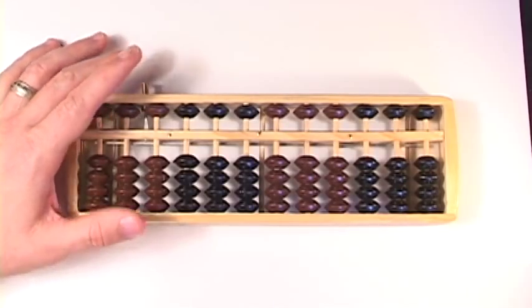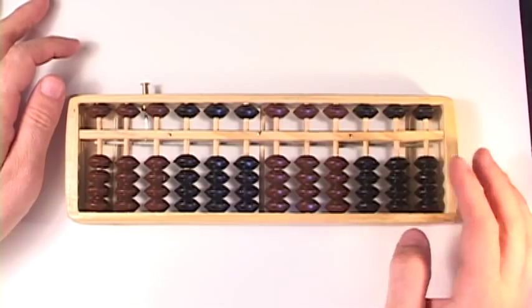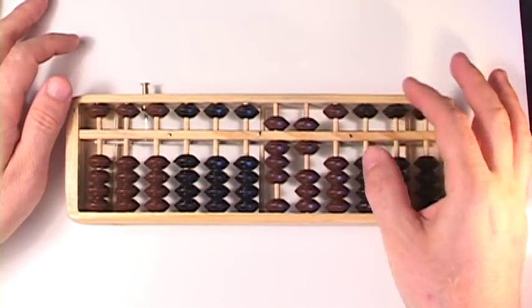Alright, let's do another one there. Okay, 861 minus 187. Let's put 861 on the abacus. An 8, a 6, and a 1.